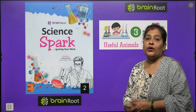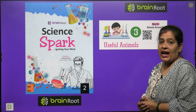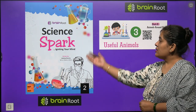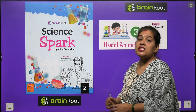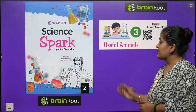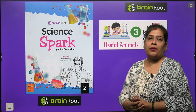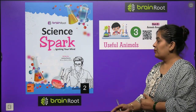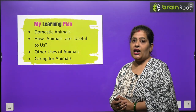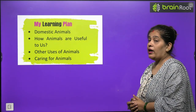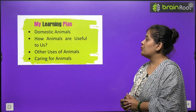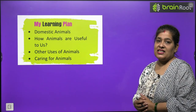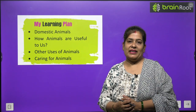Welcome back, my dear kids, to another chapter of our science book by Brain Root series. The name of our book is Science Park, Class 2. Aaj hum apna chapter number 3 start kareenge. Chapter ka naam hai Useful Animals. To chaliye chapter start karte hai. Is chapter mein hum domestic animals, how animals are useful to us, other uses of animals, and caring of animals ke baare mein kareenge.